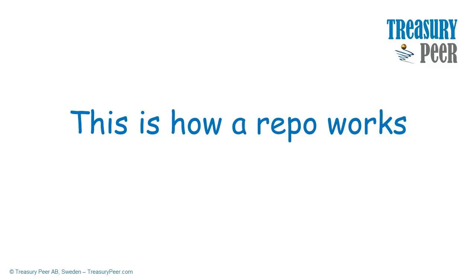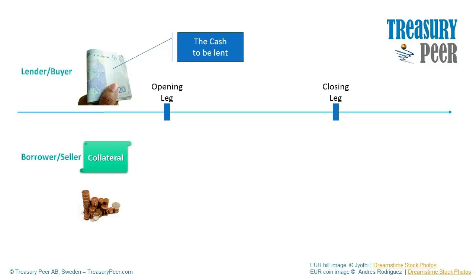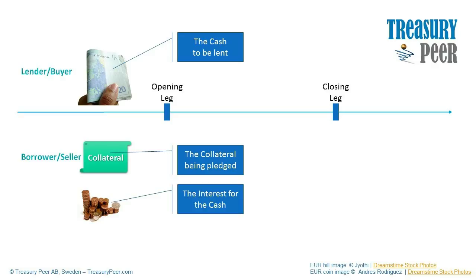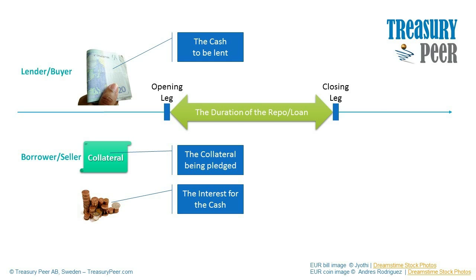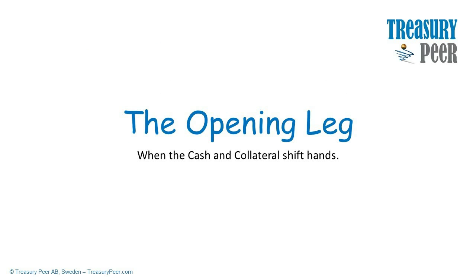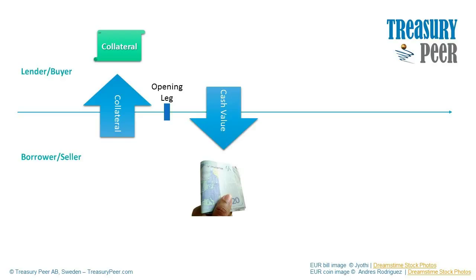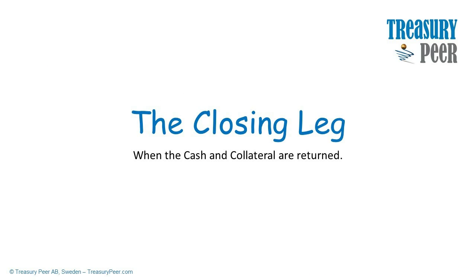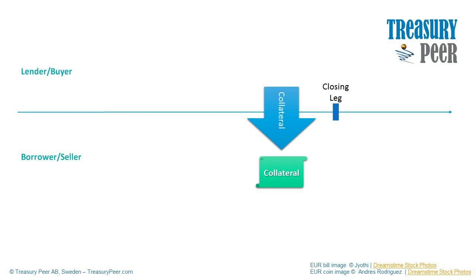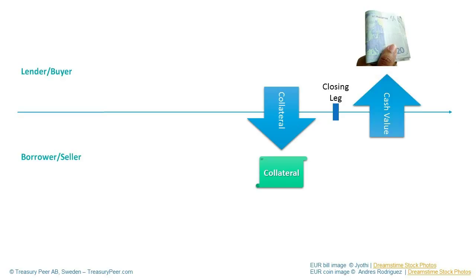This is how a repo works. You have a lender or buyer with cash to be lent, and a borrower and seller with collateral being pledged and interest to pay for the cash. The duration of the repo or loan is between the opening and the closing legs. In the opening leg, the cash and collateral shift hands — the lender and buyer receives collateral from the borrower and seller, and in return provides the borrower and seller with the cash. In the closing leg, the cash and collateral are returned: the lender and buyer returns the collateral and the borrower and seller returns the cash plus interest.